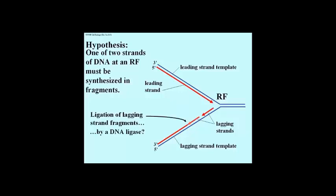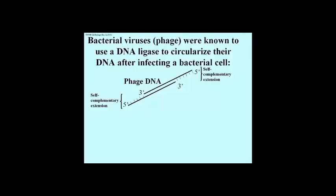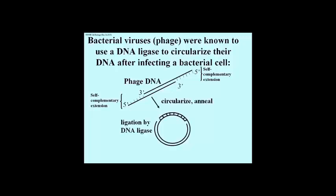The enzyme that stitches the fragments together is a DNA ligase. DNA ligase was known for a different function before it was shown to be essential in replication. During a viral infection in bacteria, the DNA that enters the cell is a linear molecule with sticky or complementary ends. Once in the bacterial cytoplasm, the linear DNA circularizes because of self-complementary ends. Then a DNA ligase encoded by the viral genome is produced in the infected cell to covalently close the circle.